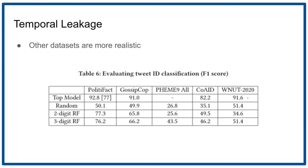And then there are other datasets like WNUT 2020 where knowing the date doesn't give you any information at all. Here, random is about 51, and knowing the date down to an accuracy of a couple of days is the same as random.